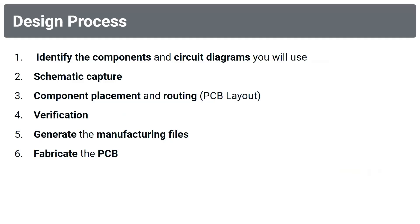So now we're going to get started. The design process for us will include six steps. We're going to identify the components and the circuit diagrams we'll use. Then we're going to go into schematic capture with the schematic editor in KiCAD. Then we'll do component placing and routing, which is PCB layout. Next we'll do verification, and then after that we'll generate the manufacturing files and fabricate the PCB.